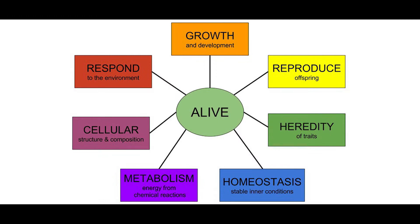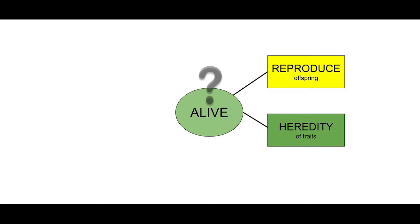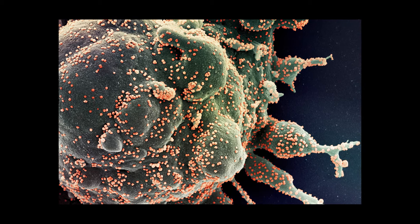It should exhibit homeostasis and pass on its genes to its offspring in heredity. Viruses don't exhibit most of the above, and the ones they do, they can't do independently. They need a host cell like this to do it, and in the process end up killing the host cell.